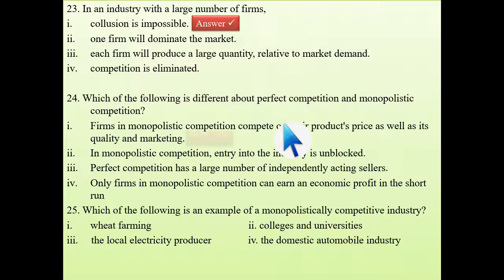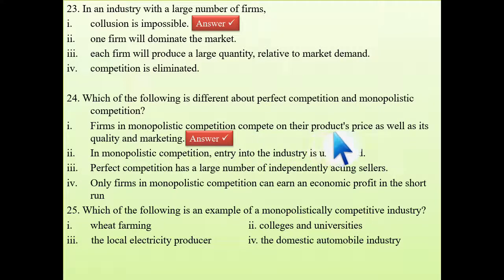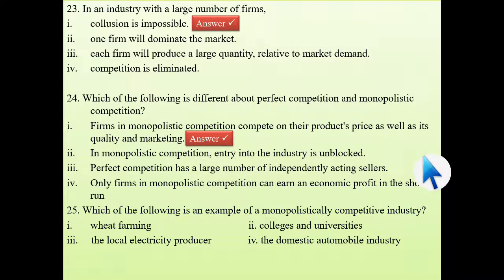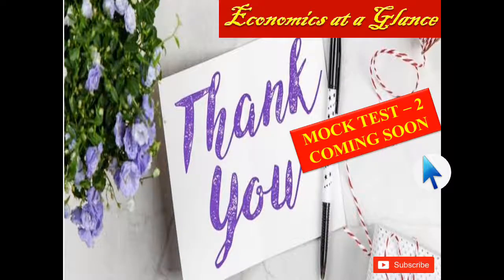Twenty-fourth question: what is different about perfect competition and monopolistic competition? In monopolistic competition, firms compete on their product's price as well as its quality and marketing, which is not seen in perfect competitive market. The last question: which is an example of a monopolistically competitive industry? The answer is colleges and universities. With this, the first part of the mock test series is over. I will come with the next mock test series on market and cost concepts — till then, stay with my channel and don't forget to like and subscribe.